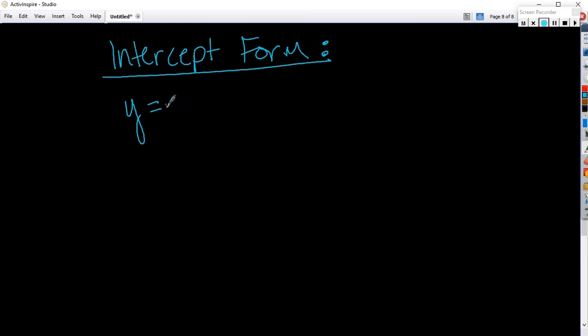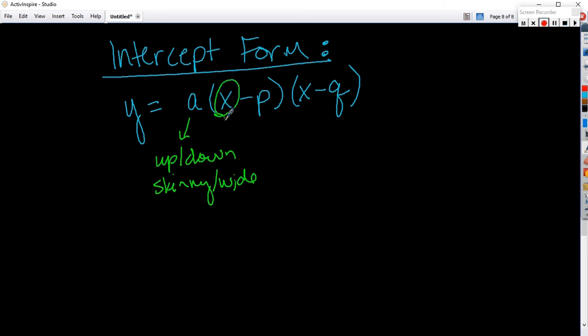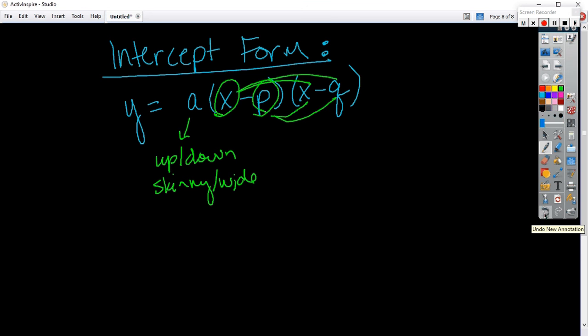Intercept form. Looks a little different. Looks a lot different, actually. Still have the A. The A still does the same thing. A always does the same thing. What does it do? Skinny wide. Up down. Skinny wide. What? First outside. I teach it as distributing. I tell my students to take the first term and distribute to this parenthesis, and then take the second term and distribute to that parenthesis, but that's not what we're doing here. I mean, if you wanted to get it in standard form, you would do that, but it's easier to graph in the form that it's given than it is to start manipulating it. So this is called intercept form. So what do you think it gives you?